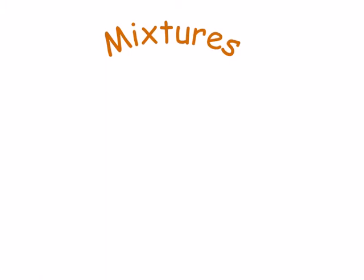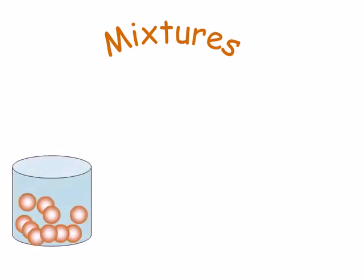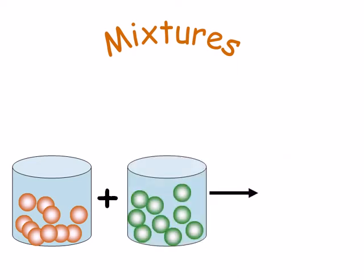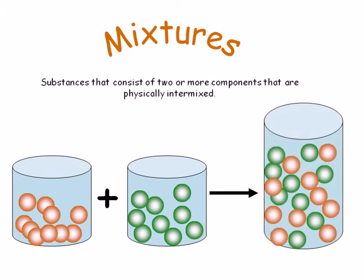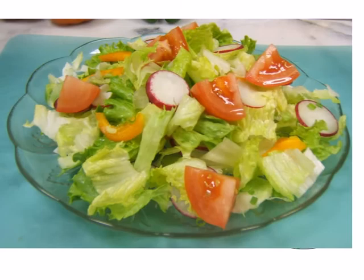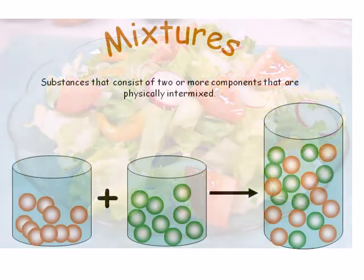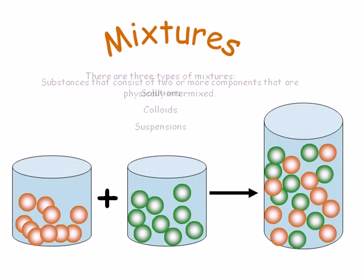Atoms rarely exist in isolation. They are often found physically interspersed with other substances, or chemically bound to other elements, or a combination of both. A mixture is defined as two or more substances that are physically intermixed but not chemically bound to one another. The substances can therefore be separated with relative ease. A tossed salad is an example of a mixture. In chemistry, there are three major types of mixtures: solutions, colloids, and suspensions.